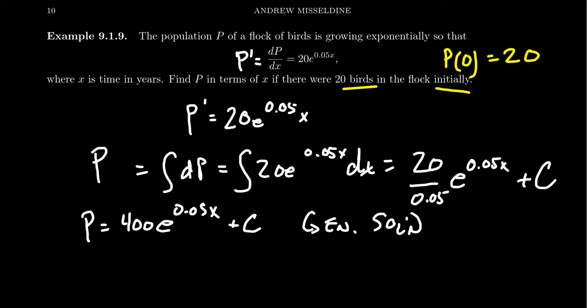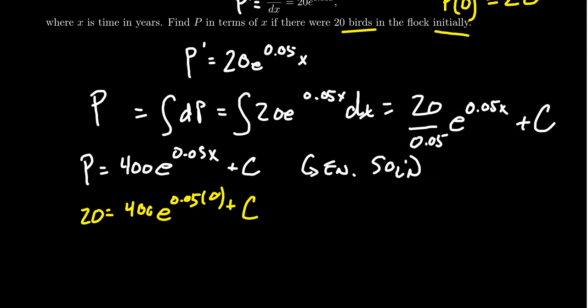If we make those substitutions, P is 20 and we get 400e^(0.05*0) + C. It's always nice when the initial value is 0—arithmetic with 0 is generally pretty nice. We get e^0, which is 1. So 400 times 1 is 400, giving us 400 + C = 20.